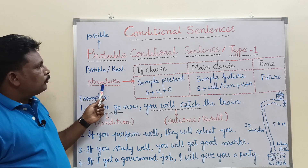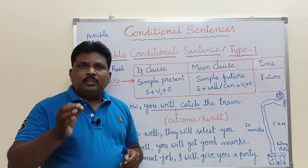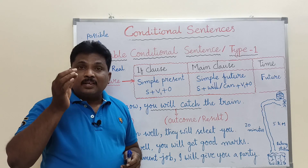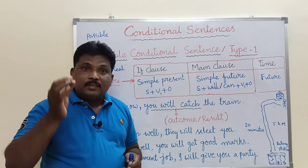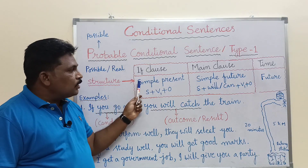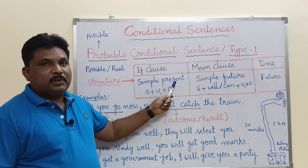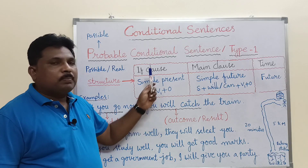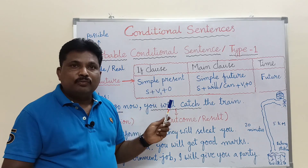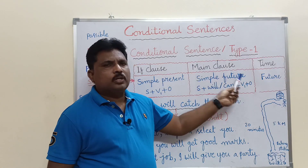Look at the structure of a probable conditional sentence. For each conditional sentence, you need to remember three things: number one, the tense of the if-clause; number two, the tense of the main clause; and number three, the time of action. The structure of the if-clause is simple present tense — subject plus V1 plus object.